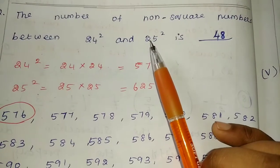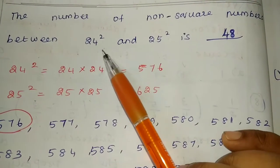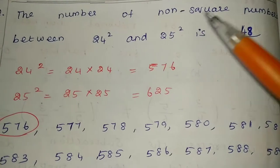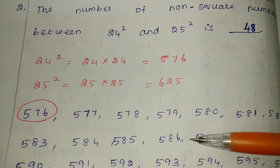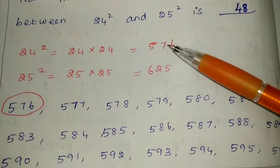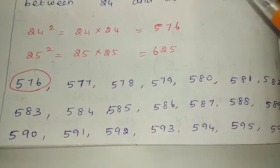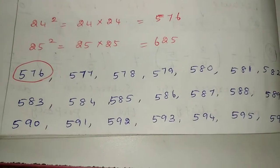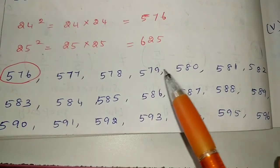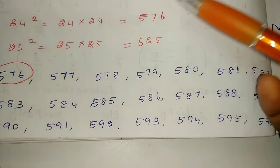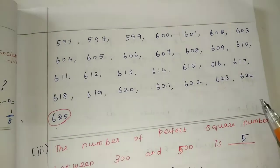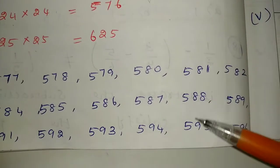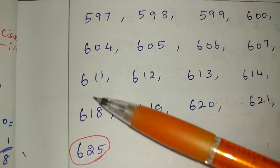Second method: for consecutive numbers n and n+1, the number of non-square numbers between them is 2 times the first number. So the consecutive number's first number is 24, and 24 into 2 is 48. This method is easy.